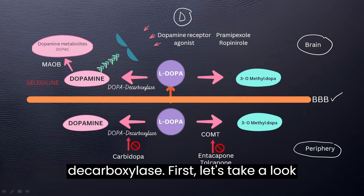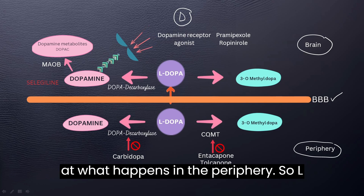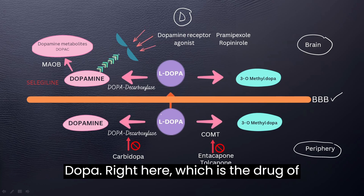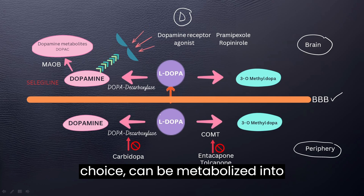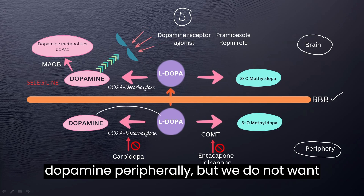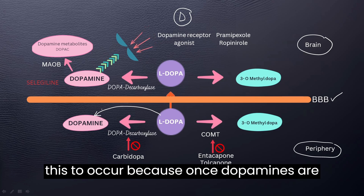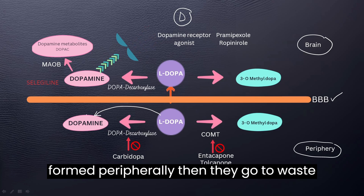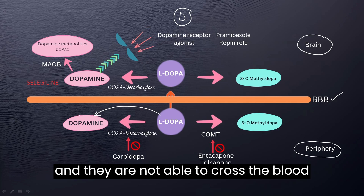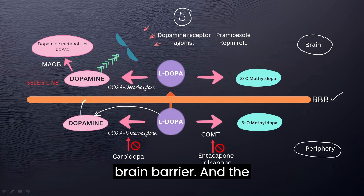Let's take a look at what happens in the periphery. L-dopa, which is the drug of choice, can be metabolized into dopamine peripherally. But we do not want this to occur because once dopamines are formed peripherally, they go to waste and are not able to cross the blood-brain barrier.